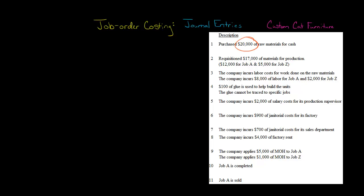First, we buy $20,000 of raw materials for cash. So we're going to debit raw materials inventory — I'm abbreviating here to save space — and we're going to credit cash. If we didn't pay cash and bought on credit, we'd credit accounts payable instead. So debit raw materials inventory $20,000 and credit cash $20,000.